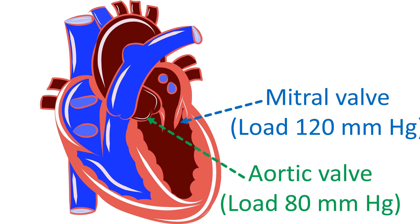In the initial stage of rheumatic fever, the heart valves are inflamed and may become regurgitant. Most commonly affected valves are the mitral valve and aortic valve. It is thought that the valves with the highest hemodynamic load in the closed position are involved more in rheumatic fever. The mitral valve faces the systolic left ventricular pressure in the closed position, and the aortic valve faces the diastolic aortic pressure in the closed position.